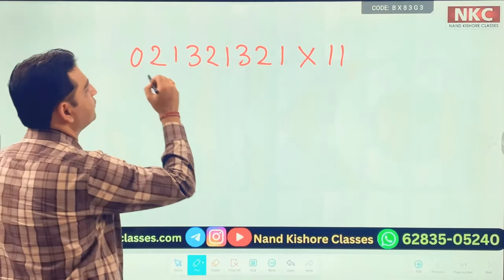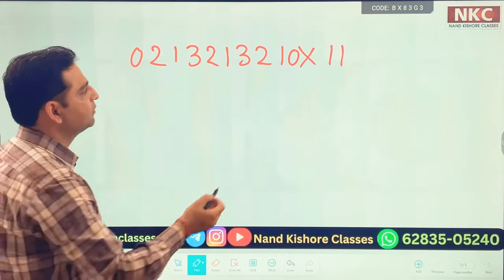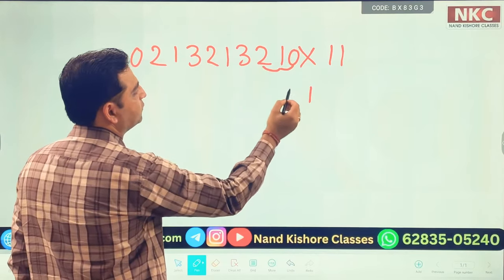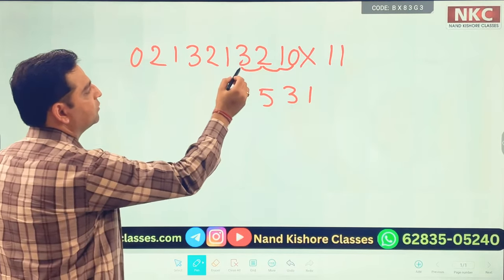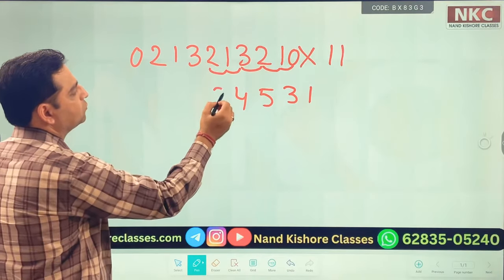Let's suppose you place a 0 here and 0 on this side and keep on adding. 0 plus 1 is 1. 1 plus 2 is 3. 2 plus 3 is 5. 3 plus 1 is 4. 1 plus 2 is 3.